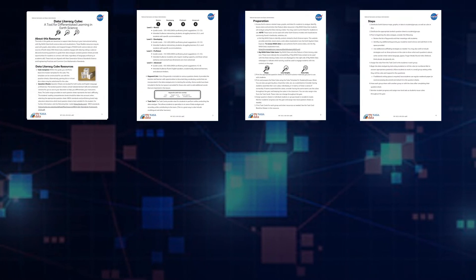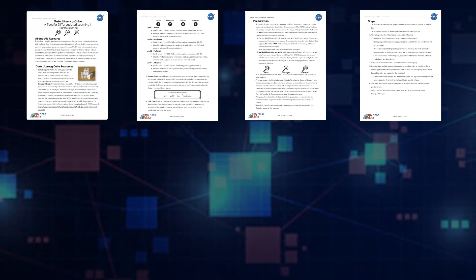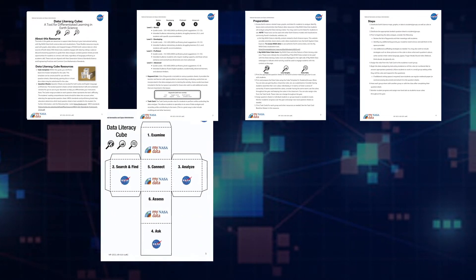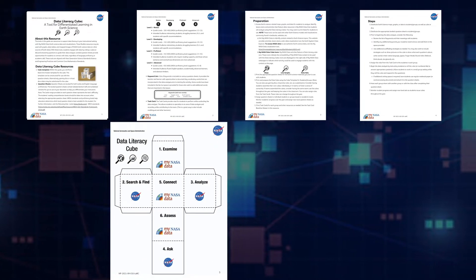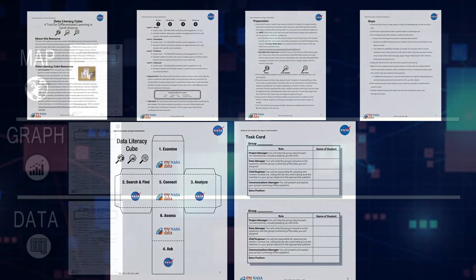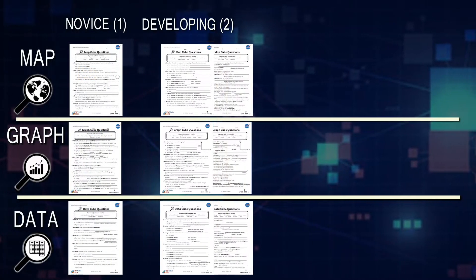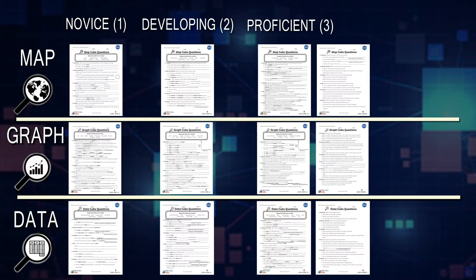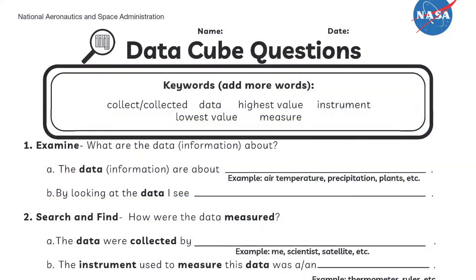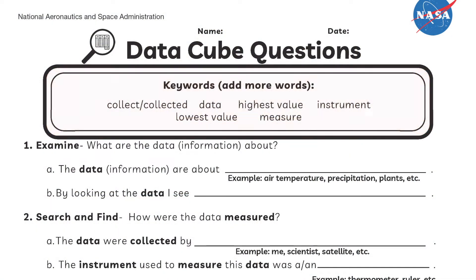Opening the PDF, we can see a complete overview of the steps needed, a cube template, the task card, the question sheets ranging from Level 1 to Level 4, and the keywords included at the beginning of most question sheets.